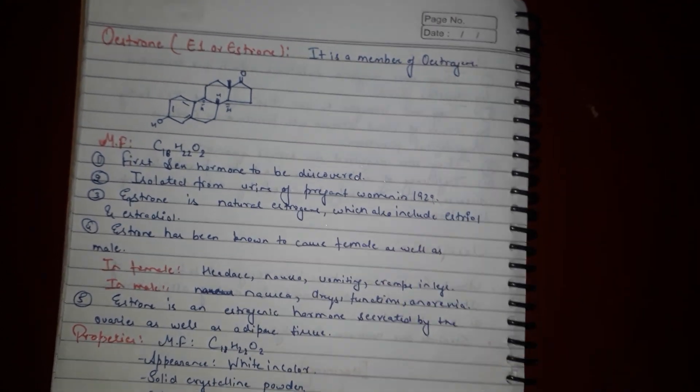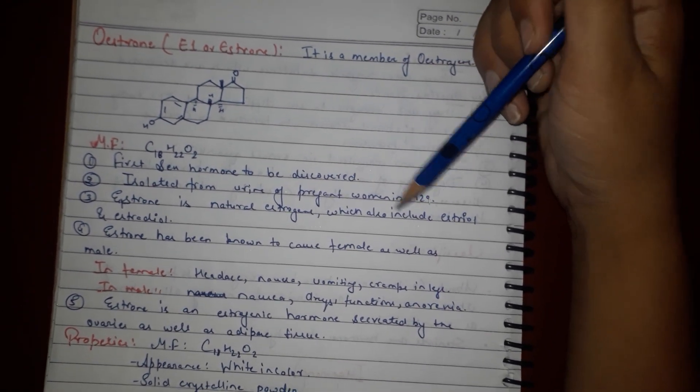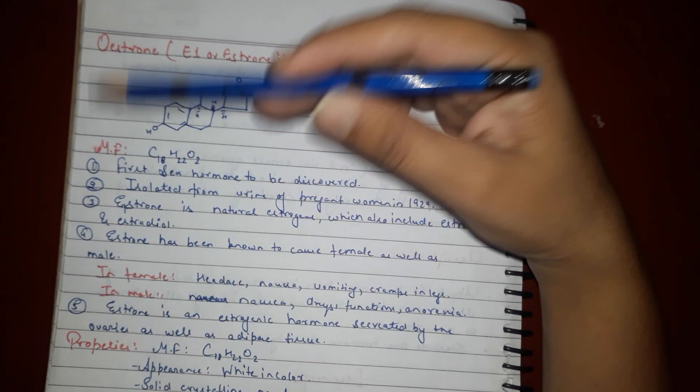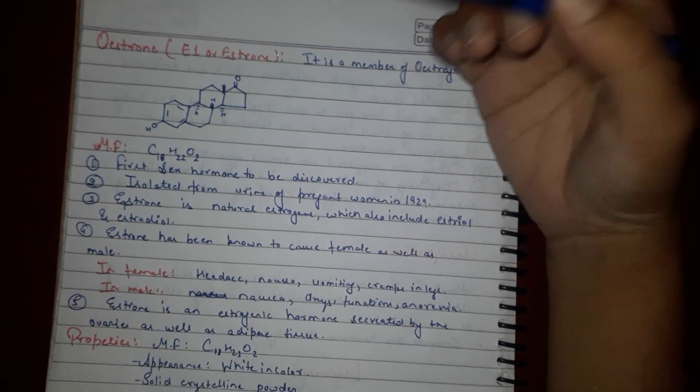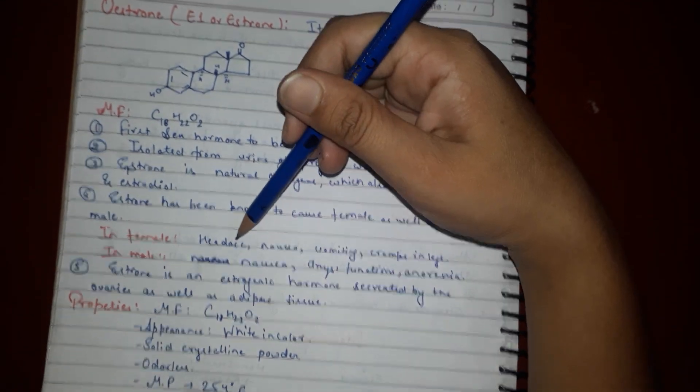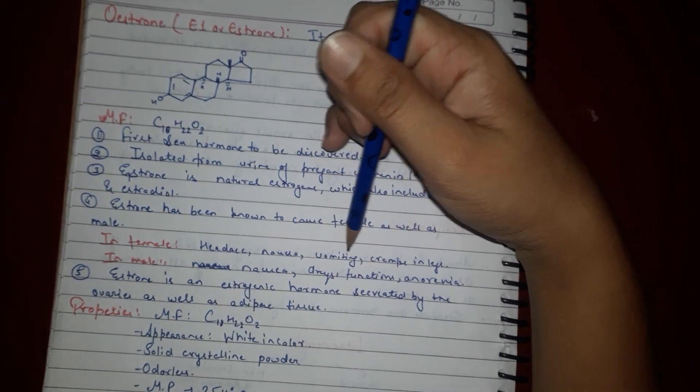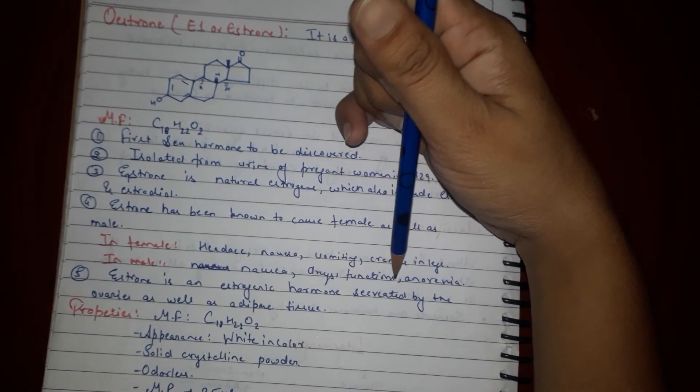Estrone is a naturally occurring estrogen which also includes estriol and estradiol. In females it causes headache, nausea, vomiting, and cramps in the leg. In males it causes nausea, decreased sex drive, dysfunction, and anorexia and vomiting.